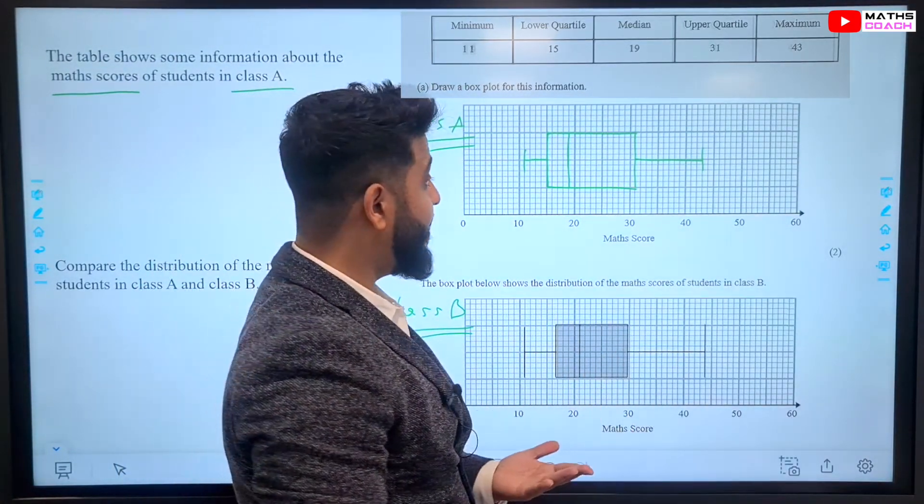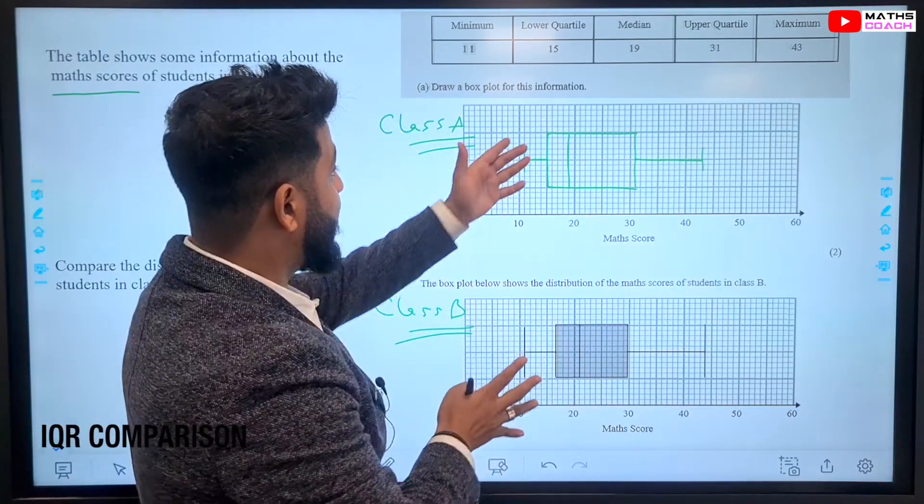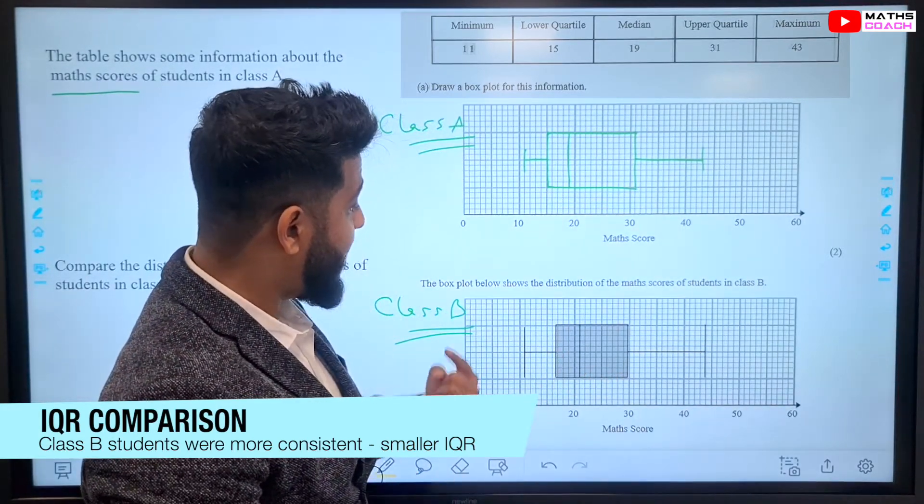You could make a point about that, about consistency, because interquartile range shows how consistent the students are in each class. And you can see that they're more or less quite consistent. However,